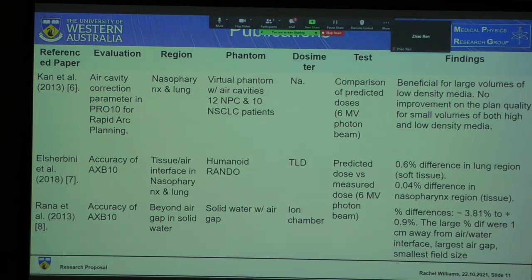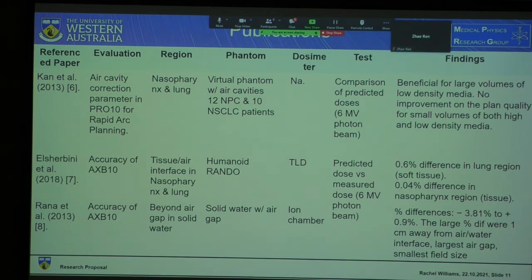There were no papers in the literature on the evaluation of the air cavity correction parameter. One study evaluated it in Pro version 10 for RapidArc planning by comparing using the parameter to not using it on both virtual phantoms and 12 nasopharyngeal carcinoma patients and 12 non-small cell lung cancer patients. They found it was beneficial for large volumes of low density media, but made no improvement on plan quality for small volumes of both high and low density media.